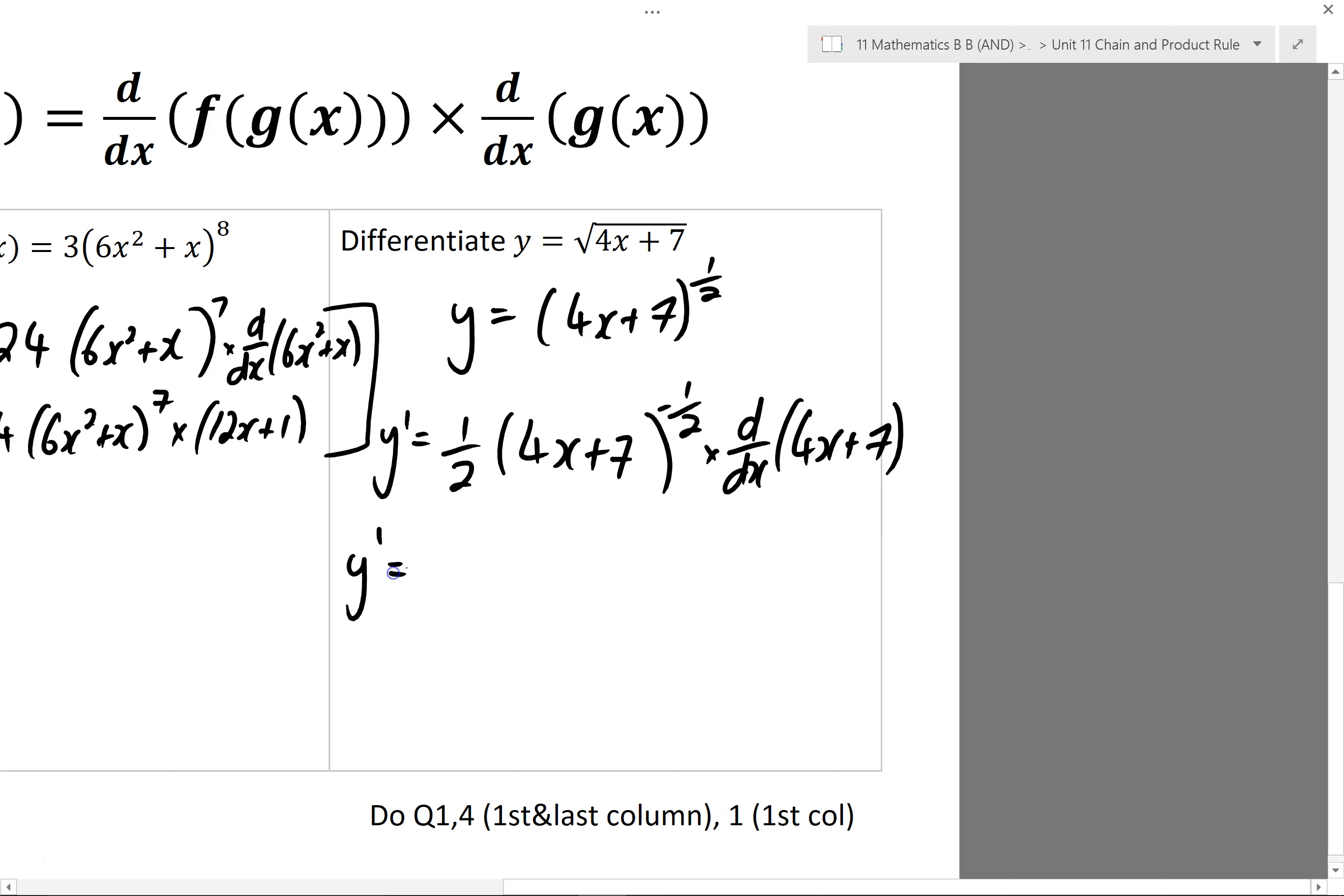So my derivative will be a half, 4x plus 7 to the minus a half times 4. 4 times a half is 2. And this one with the negative power, I'm going to take below the fraction line, and it'll be to the power of positive a half. So it should be 4x plus 7 to the positive a half.